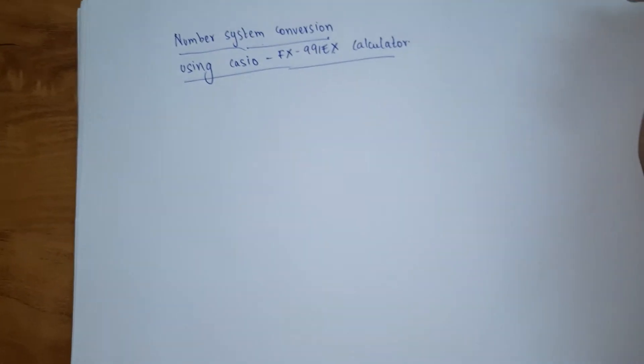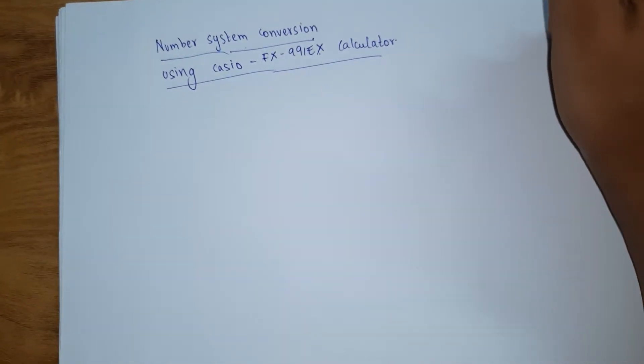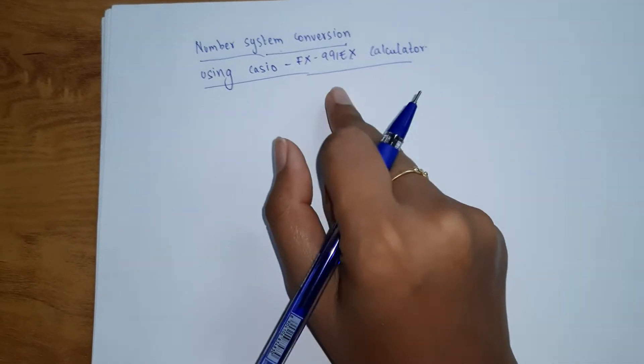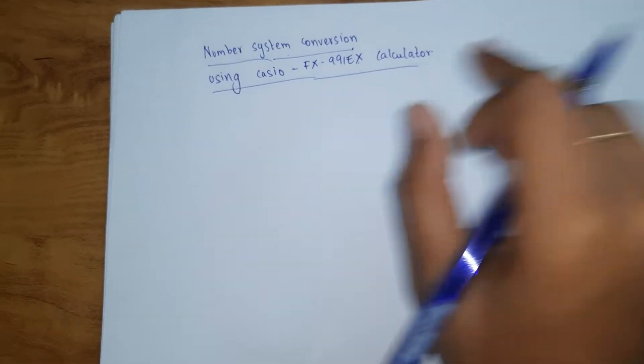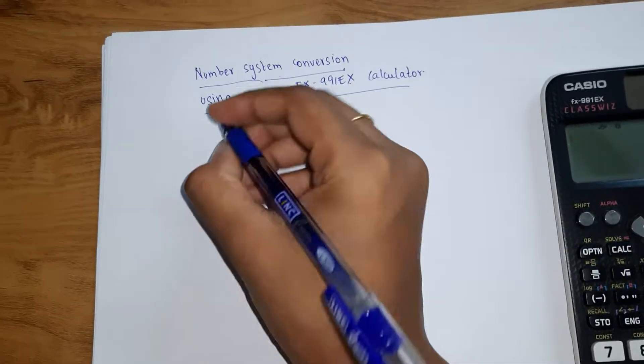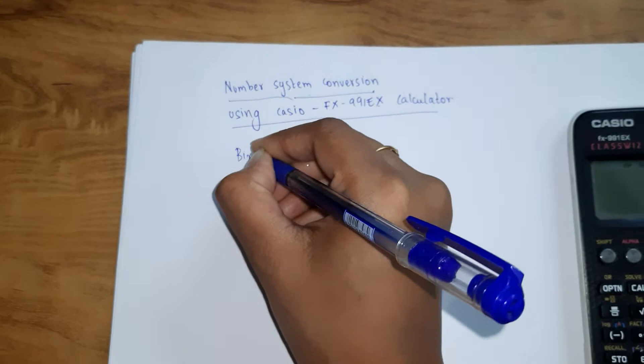Hello guys, welcome back to my channel Nerdy Nerdy is the name. So today we are going to see number system conversion using the Casio FX-991EX calculator. So first, let us start. Number conversion means what? Binary to decimal or decimal to binary or decimal to hexadecimal or hexadecimal to decimal.